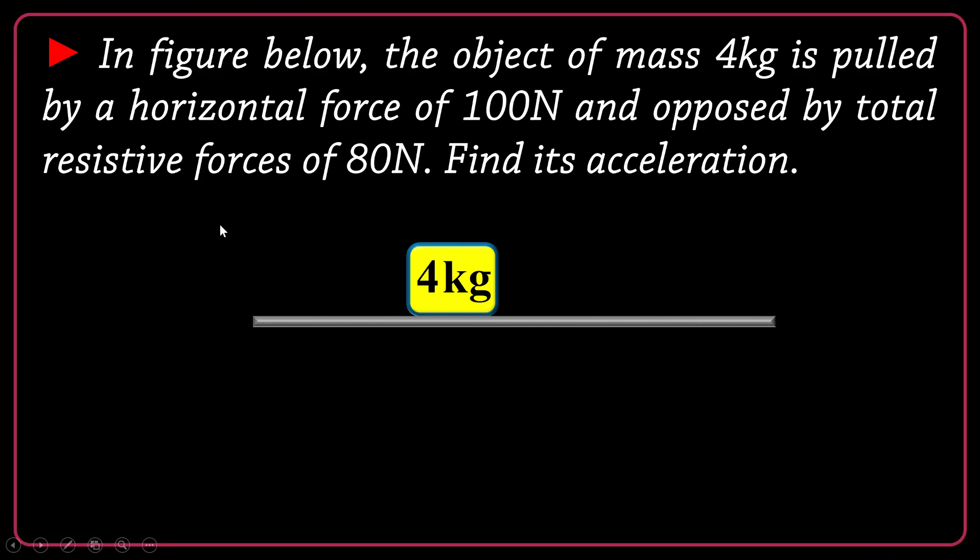In figure below, the object of mass 4 kilograms is pulled by a horizontal force of 100 newtons and opposed by a total resistive force of 80 newtons. So total resistive forces acting on the object would be something like 80 newtons against that 100. Find its acceleration.